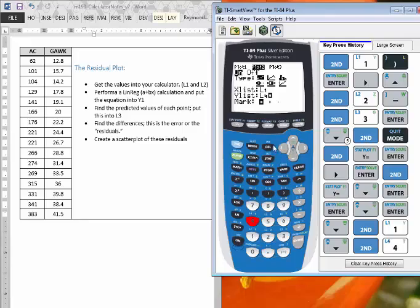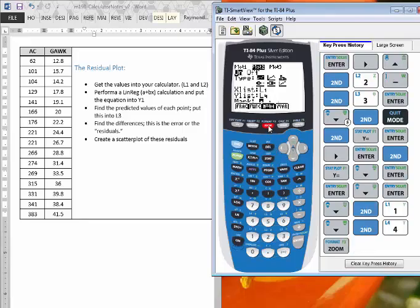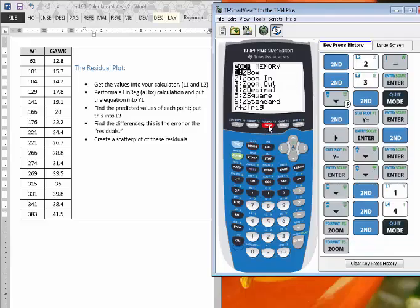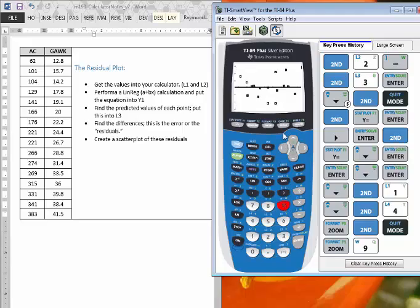So at this point, we're ready to see the plot. I'll just go to zoom. Always go back to the home screen. So let's go back to the home screen. Now let's try zoom. And number nine is zoom stat. You can scroll down and find zoom stat, or you can just press number nine.